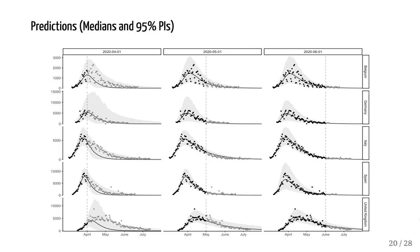Now on to some results. We performed historical validation by fitting the model to past data up to a certain point and predicting out the rest of the trajectory. Here we see the model fit using data up to April 1st, May 1st and June 1st for five European countries. In three cases, we see that on April 1st, it is predicting the trajectory quite accurately with the median prediction.